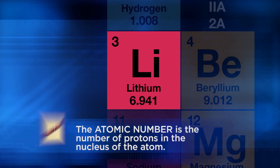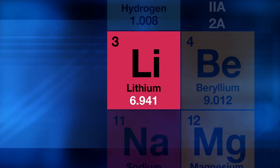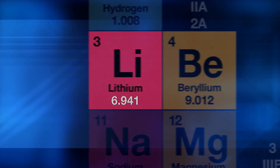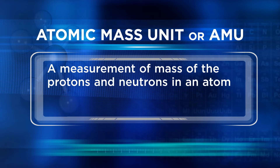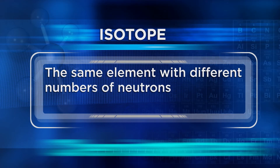Look at lithium. Do you see the number 6.9? There may be some other numbers after the 9, depending on the periodic table. Look at beryllium and find 9.0 — again, there might be extra numbers. These numbers are known as the average atomic mass and are measured in atomic mass units, or AMU. It's a weighted average of all the isotopes of that element in the universe. An isotope is the same element with different numbers of neutrons, which causes it to have different masses.